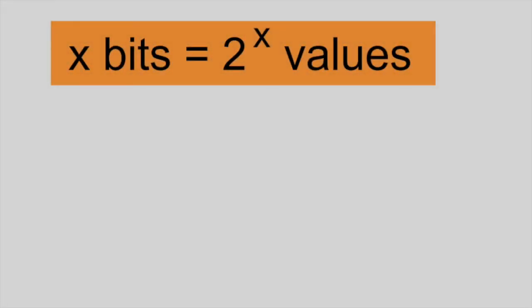You may have noticed a relationship between the number of bits and the number of values that can be represented. As a general rule, x number of bits can represent a total of 2 to the x different values.